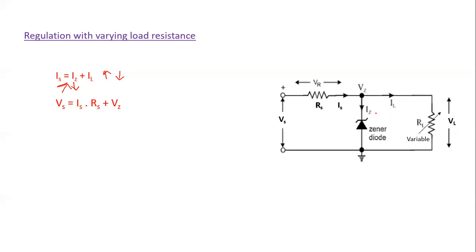We know that VZ will remain constant, and that is the feature of the Zener diode during the breakdown condition. Since VZ is constant and IS·RS is constant, VZ remains constant within a particular region. This is how the Zener diode manages to accommodate the changes when we vary the load resistance — IZ adjusts to compensate so the output voltage remains stable.